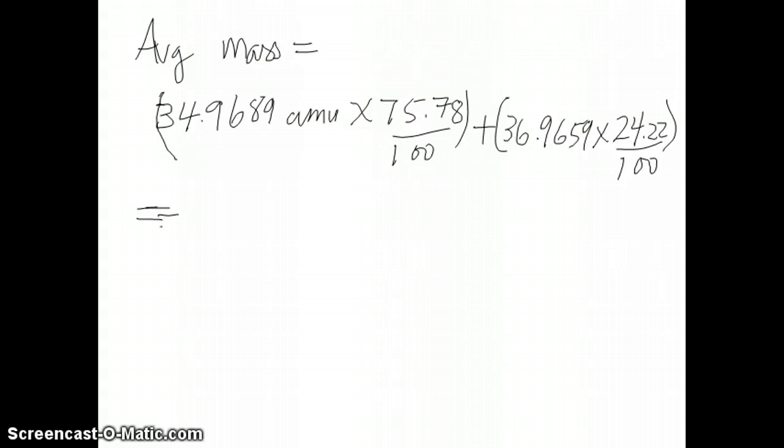So if I were to multiply 34.9689 times 75.78, what I get is, on one side, 26.4994.